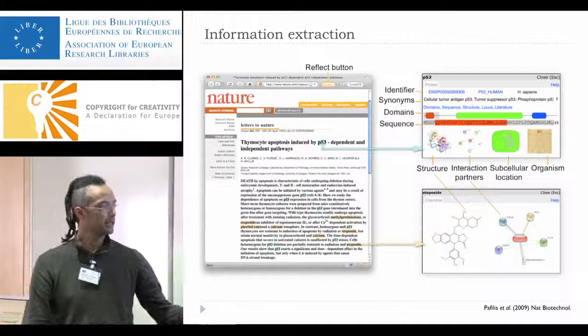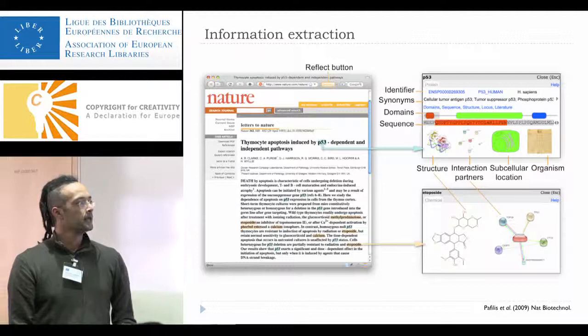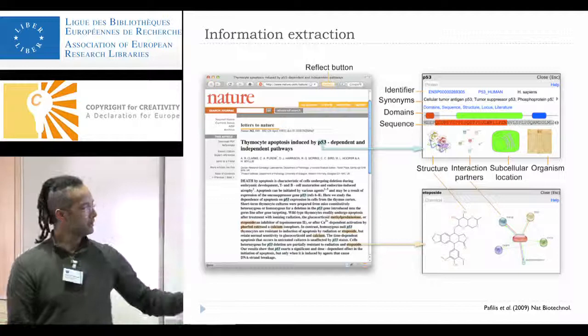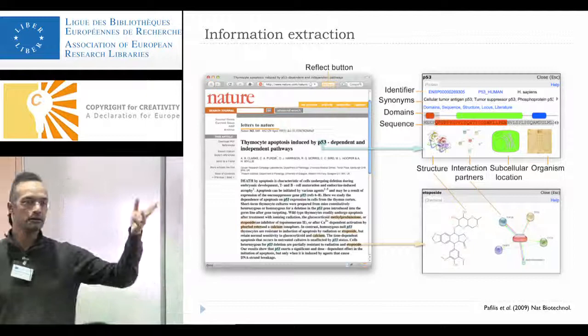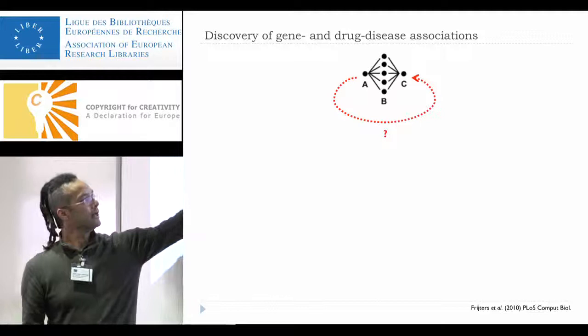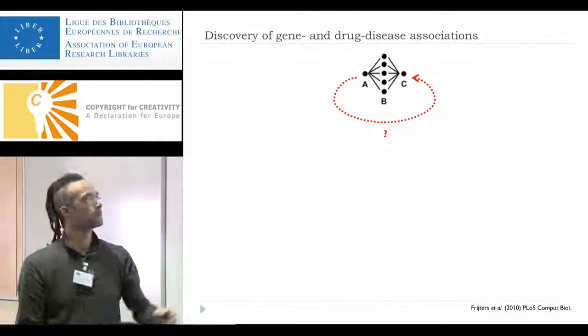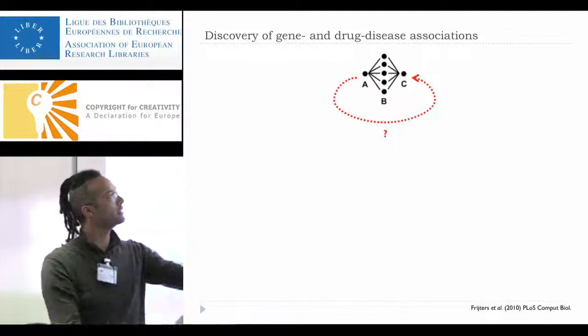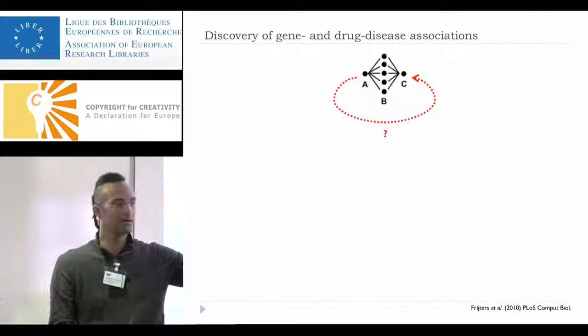Sometimes a gene co-occurs with a chemical, and this is a co-occurrence analysis you can start to do. The idea is: if A co-occurs with B — a gene and a disease found in one article — and independently C also co-occurs with B, then maybe a link between A and C exists. This was demonstrated in 2010. You take a timeline, mine only things before 2007, and find many genes co-occurring with two concepts.